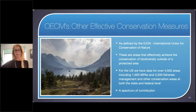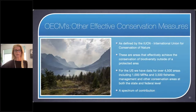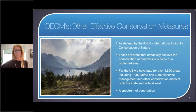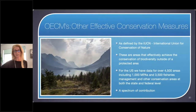On OECMs — other effective conservation measures — there's some debate in the community, but it's important to note that the spectrum of contribution of these various areas has a conservation benefit. For the U.S., we have data for over 4,500 areas, including 1,000 MPAs and 3,500 fisheries management areas and other conservation areas at both the state and federal level.